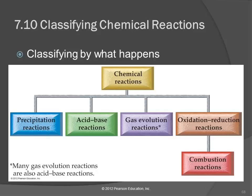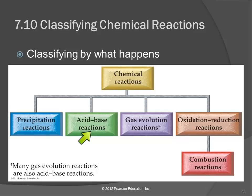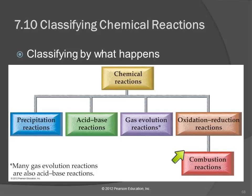One way to classify reactions is by looking at what happens. One classification is precipitation — we observe the reaction and see a precipitate forms. An acid-base reaction — perhaps not as easy to observe, but we can observe that the pH has changed, that the acid or base has been neutralized. Gas evolution reactions — you see bubbles or smell something; a gas is being evolved. Oxidation-reduction reactions — observing those is a little more subtle. Combustion reactions are a subcategory of oxidation-reduction reactions. These are classifications based on what happens in the reaction.